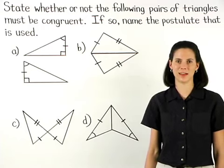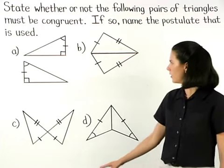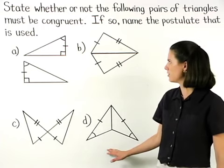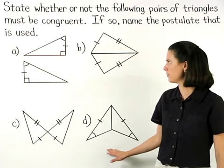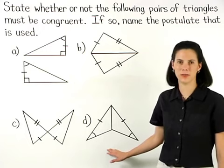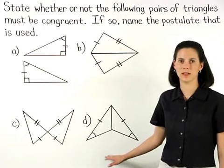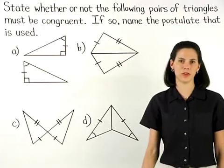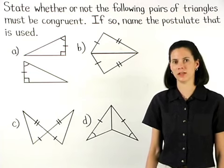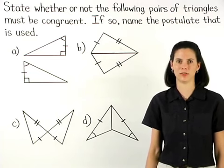In this example, we're asked to state whether or not the following pairs of triangles must be congruent, and if so, name the postulate that is used.